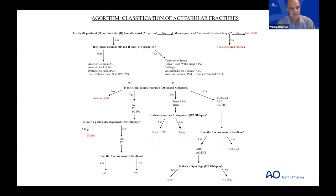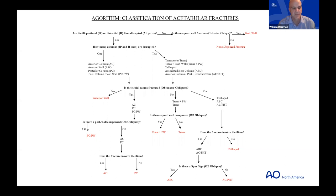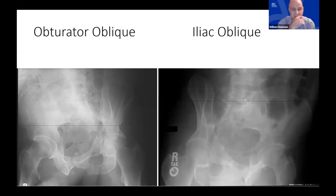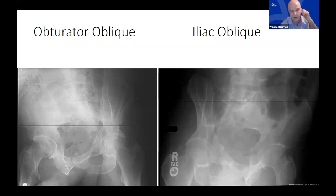Walking through the first case: the typical vignette is a middle-aged to elderly man in his 60s who falls from a bicycle, has hip pain, and can't walk. He presents to the ER. Sometimes the initial AP radiograph looks negative. The algorithm helps us walk through the Judet obliques — the obturator oblique and the iliac oblique — to start classifying the fracture.